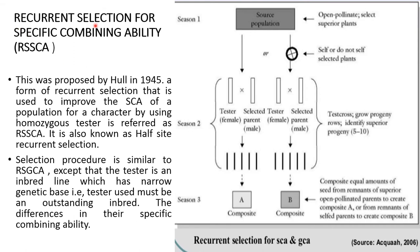Recurrent selection for specific combining ability: this method was proposed by Hohul in 1945. It is a form of recurrent selection used to improve the specific combining ability of a population for a character by using a homozygous tester. It is also known as half-sib recurrent selection. The selection procedure is similar to that of recurrent selection for general combining ability, except that the tester is an inbred line with a narrow genetic base.